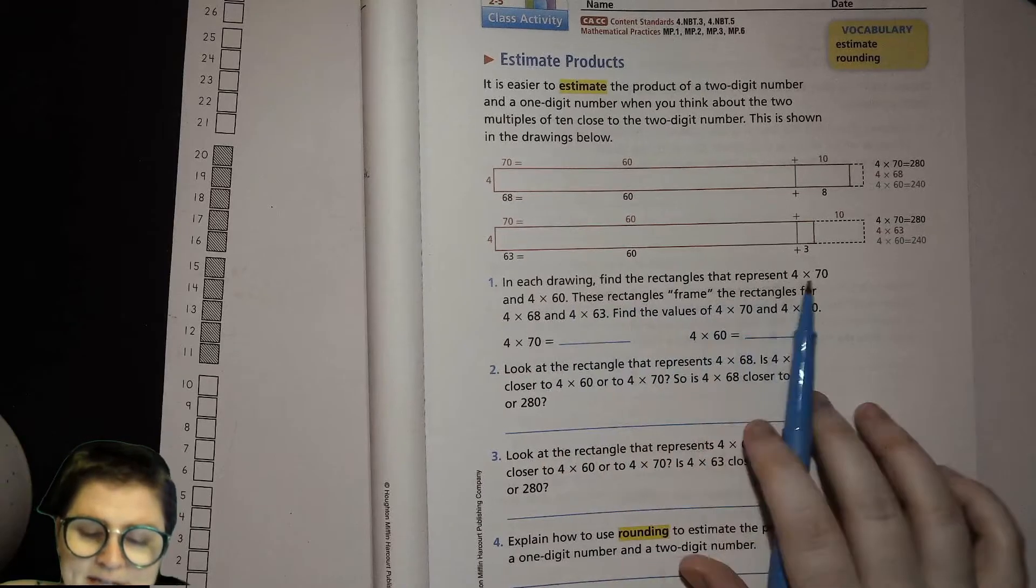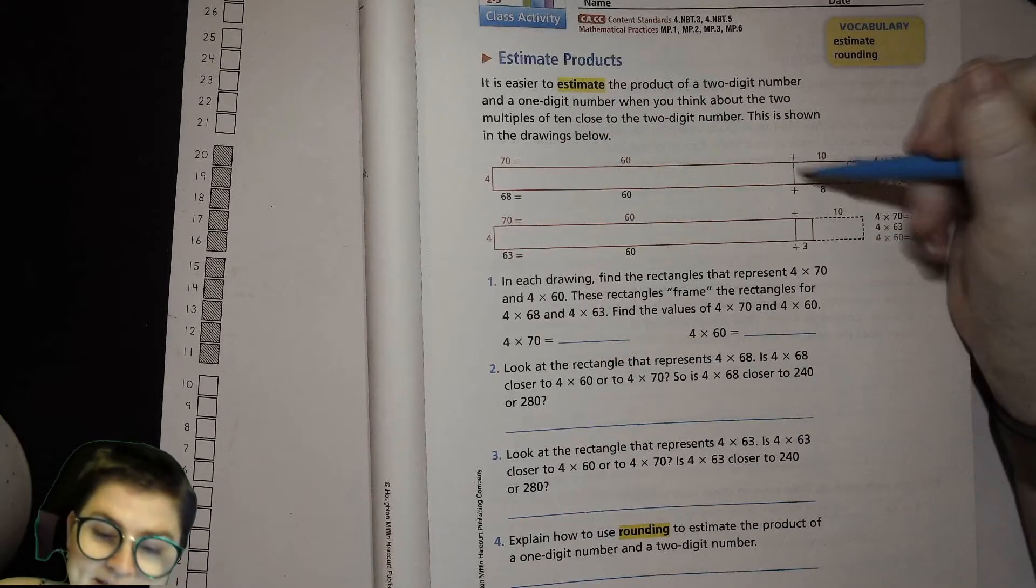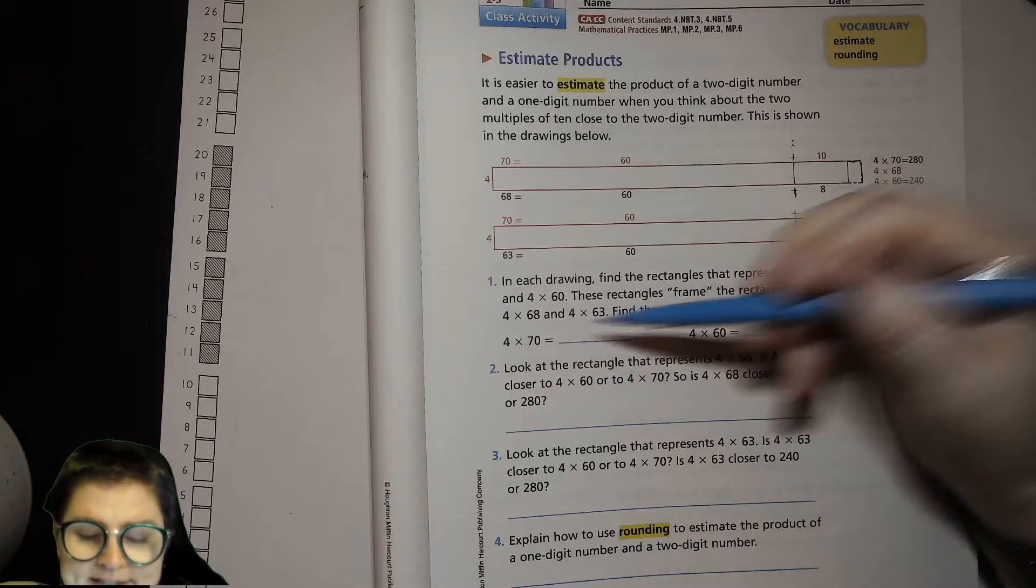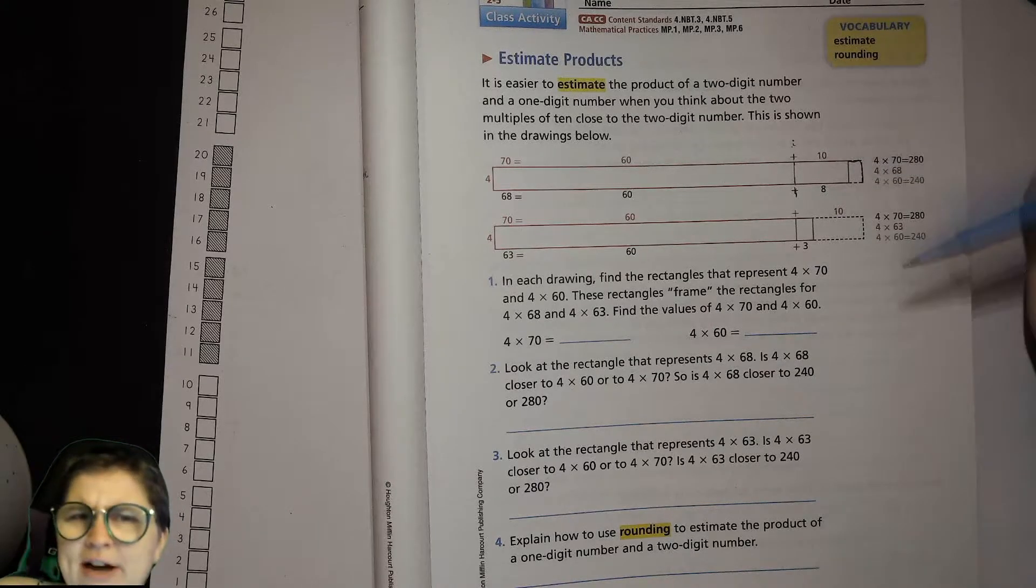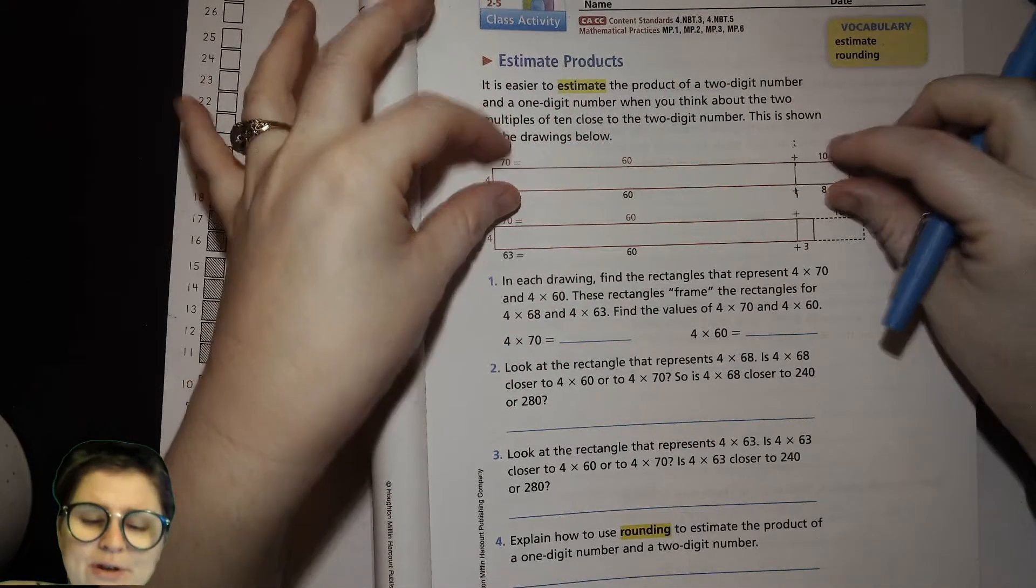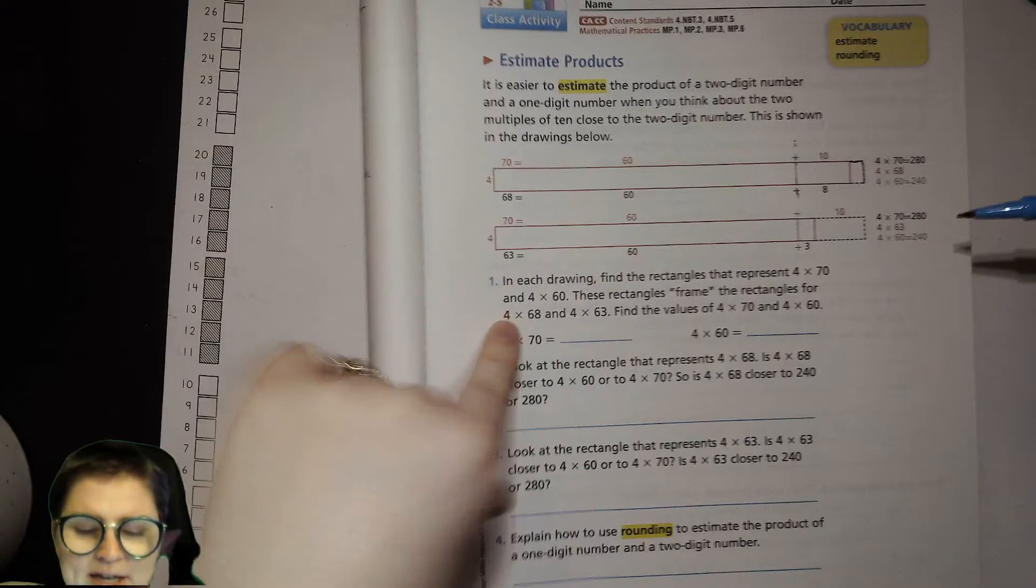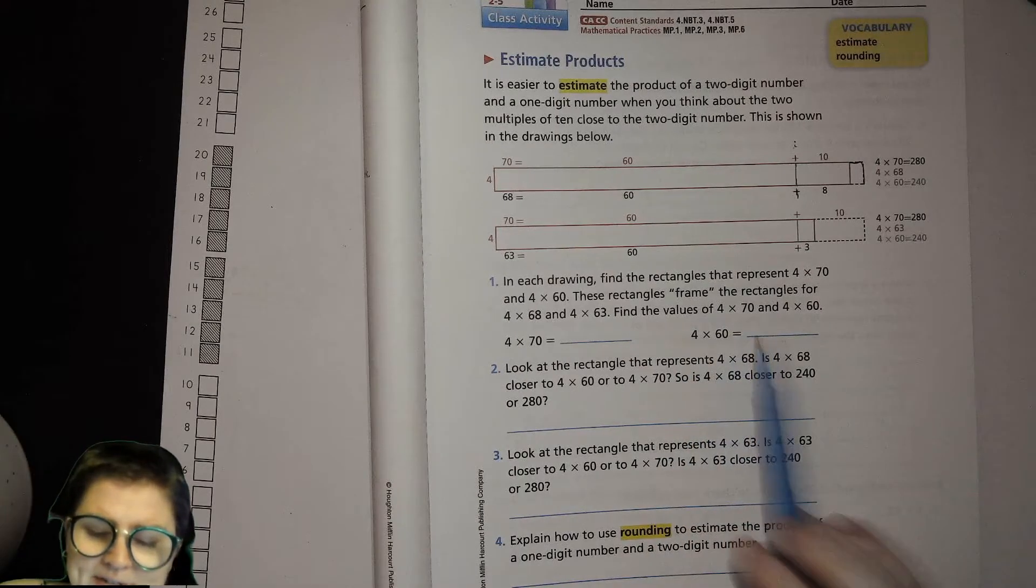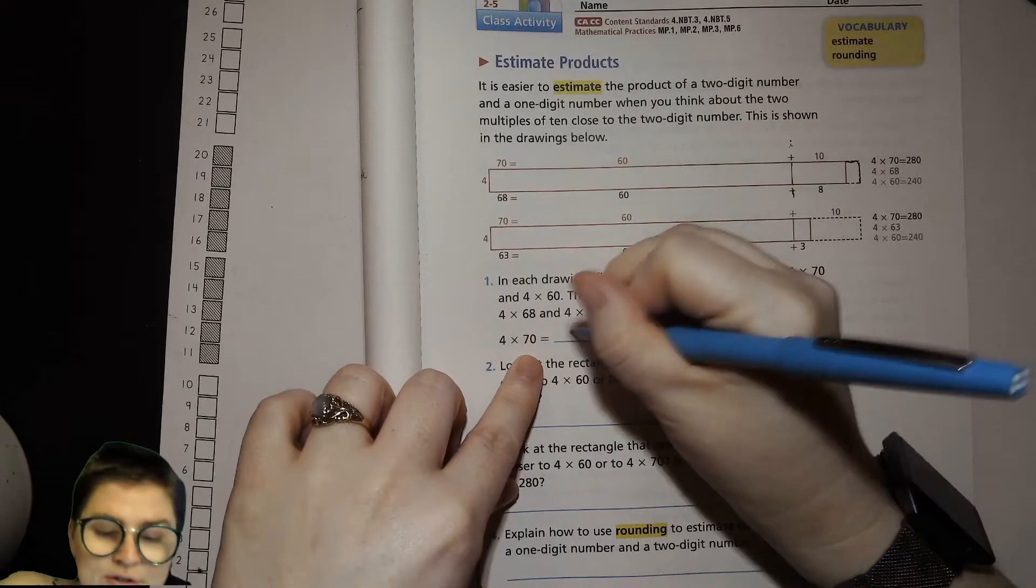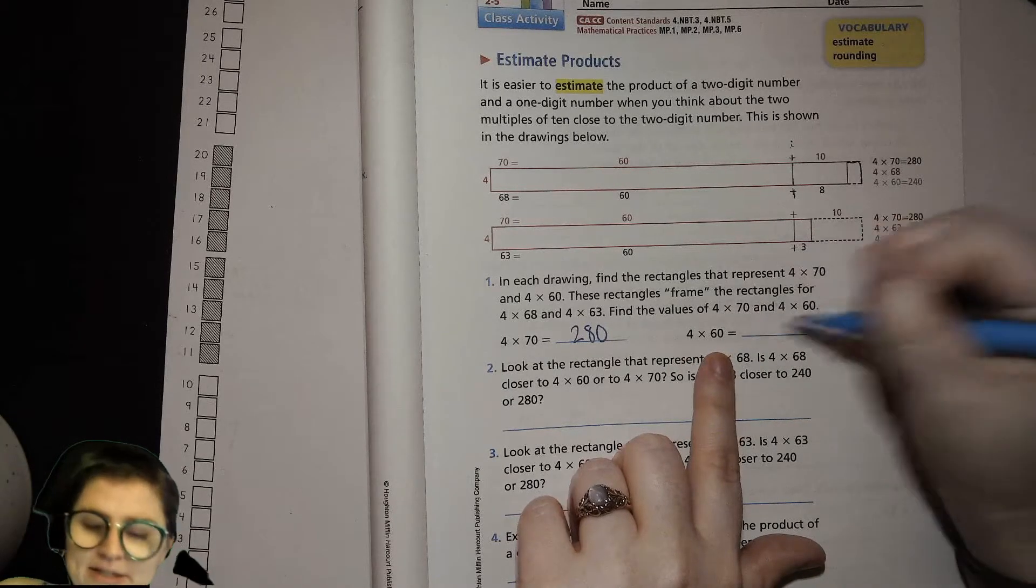So it says right here, in each drawing find the rectangles that represent 4 times 70 and 4 times 60. We just did that. So the 4 times 70 goes all the way out to here, and the 4 times 60 goes to here right here. Okay, these rectangles frame the rectangles for 4 times 68 and 4 times 60. And I want to just address here, I was a little bit confused looking at this, but just imagine like they've stacked these on top of each other because they're not separate rectangles. They're sort of layered on top of each other. Okay, I think that helped me understand it. So find the values for 4 times 70 and 4 times 60. We've done that already. So 4 times 7 is 28, so 4 times 70 is 280. Good. 4 times 6 is 24, 4 times 60 is 240.